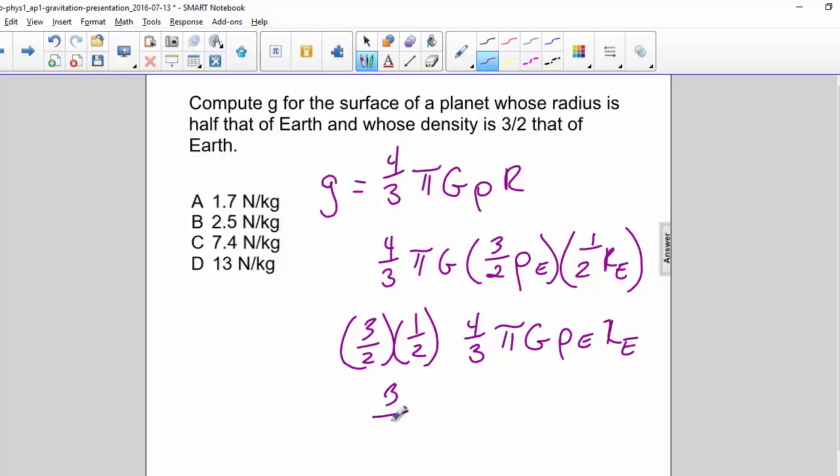This becomes three fourths and the rest of this is equal to nine point eight. So three fourths of nine point eight is seven point three five meters per second squared. Our correct answer is C.